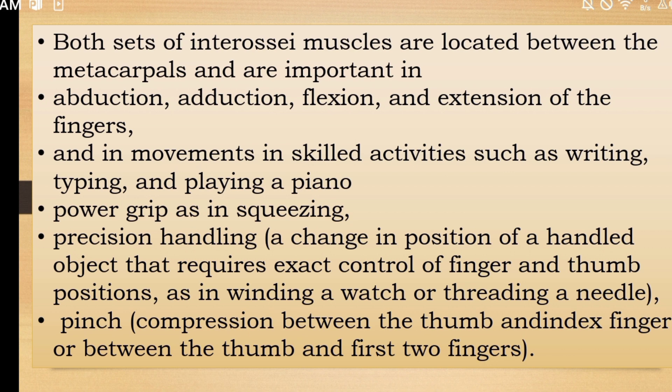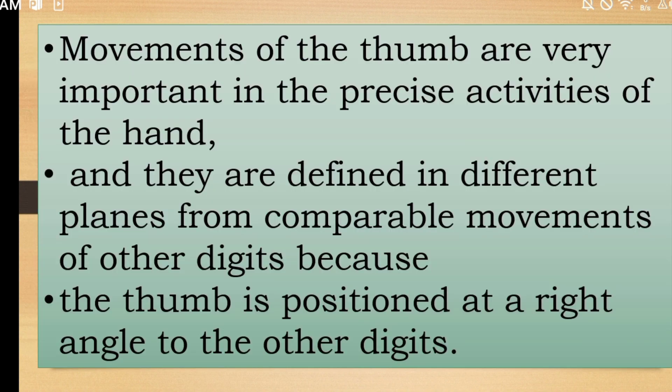Both sets of interossei muscles are located between the metacarpals and are important in movements in skilled activities such as writing, typing, and playing a piano. The palmar interossei and dorsal interossei are the most posterior of this series of muscles.